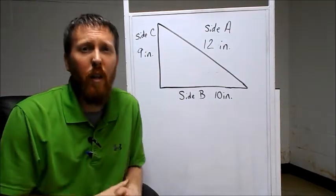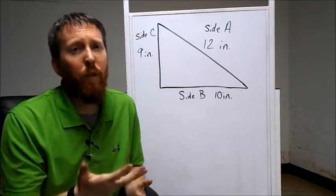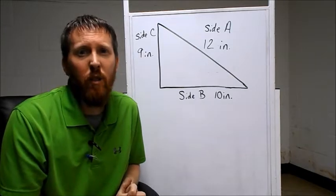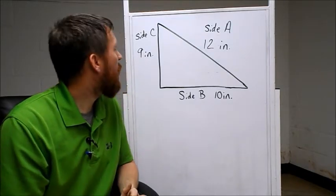So the first question, and all these questions are going to be found on Google Forms. The first question is, which side is the shortest? Side A, B, or C?